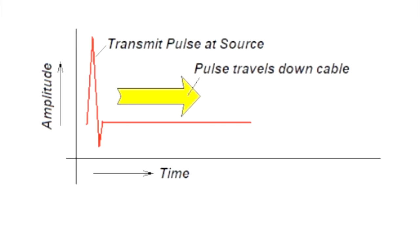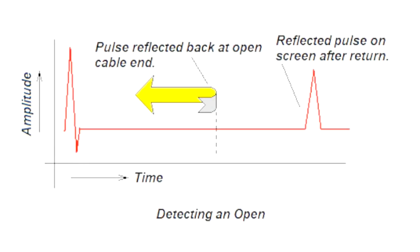Yes, we're going to build a TDR, but first let's continue with the TDR discussion so I can convince you of why you might want to build one. We're looking at amplitude, which is this line, versus time, which is this line. The transmitted pulse occurs here, and over time the pulse travels down the length of the cable. When it gets to the end of the cable, it's going to reflect almost all of the energy back to the source, and then we see on the oscilloscope the return pulse.